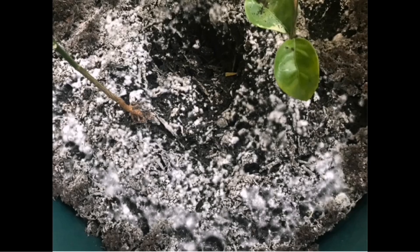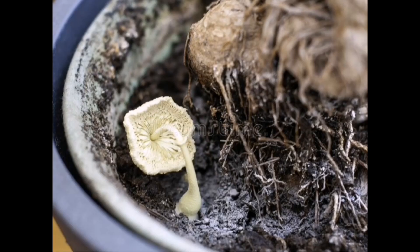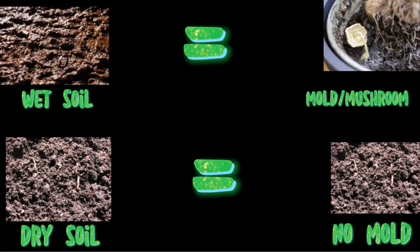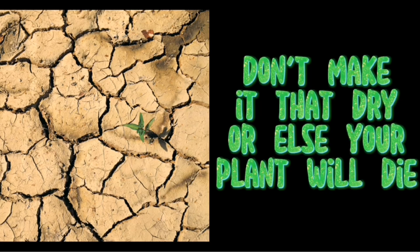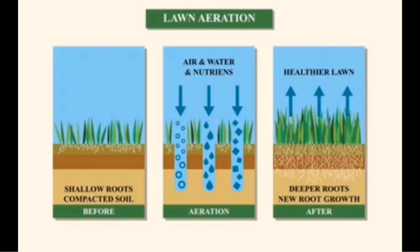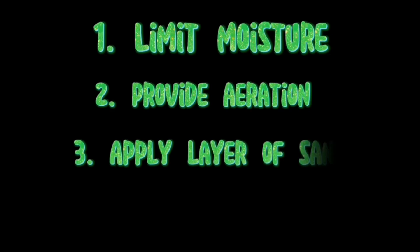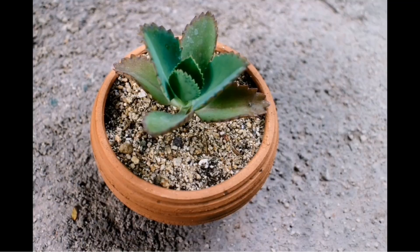Although molds and mushrooms on the surface won't harm your plants, follow these practices to prevent them from forming. Step 1: Limit moisture — avoid keeping soil damp and allow it to dry out slightly between waterings. Step 2: Provide aeration — increase airflow around the plants using a fan or wind. Step 3: Apply a layer of sand — apply 25 percent of sand on top of soil.